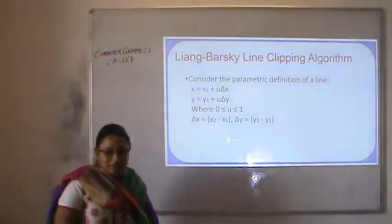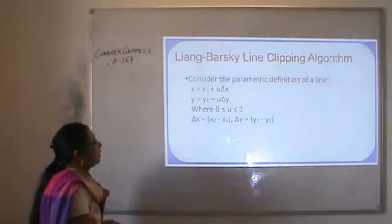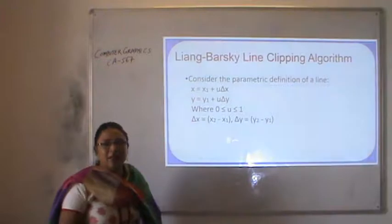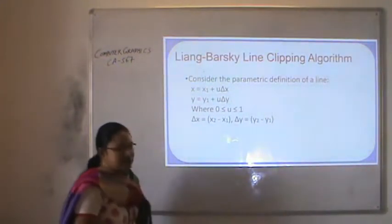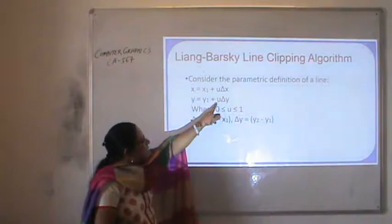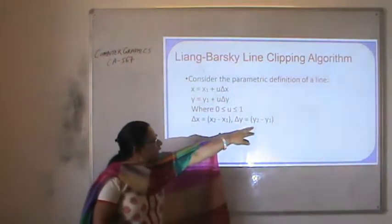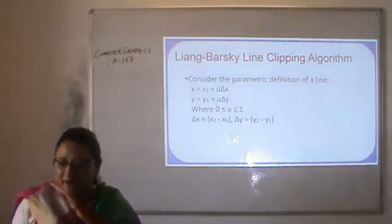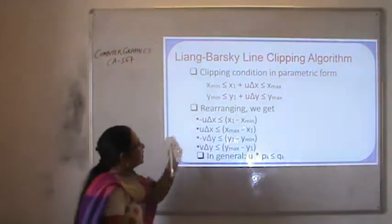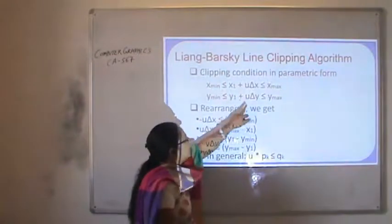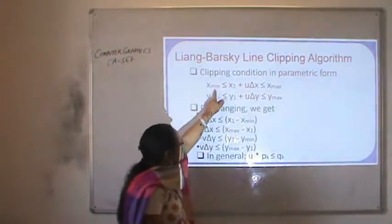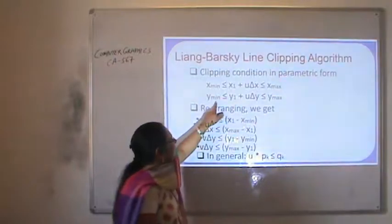To solve this problem, we consider the parametric definition of a line. To find out the intersection points, x is equal to x1 plus u delta-x, where delta-x is x2 minus x1; y is y1 plus u delta-y, where delta-y is y2 minus y1, and the value of u lies between 0 and 1. The clipping condition says anything that lies between x-min and x-max, and y-min and y-max, will lie on the clipping window.